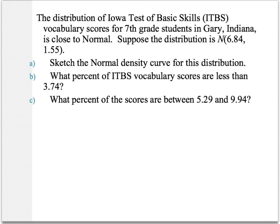Here's an example of how we can use the mean and standard deviation to actually answer some questions. Here's an Iowa Test of Basic Skills (ITBS) given to 7th grade students on their vocabulary. They tell us it's approximately normal, where they use this notation, which just means that it is normal. The first number is 6.84, which represents the mean. The second number is 1.55 and represents the standard deviation. So they ask us three questions: Sketch the normal density curve for this distribution. What percentage of the vocabulary scores are less than 3.74? And what percentage of the scores are between 5.29 and 9.94? These questions can be answered fairly easily as long as we draw an accurate bell curve.